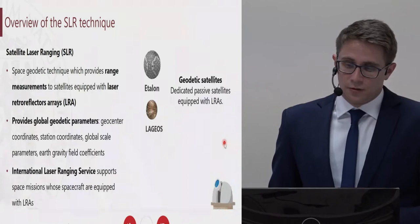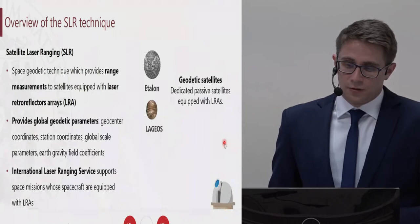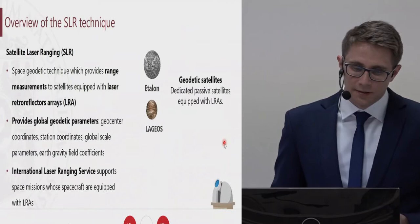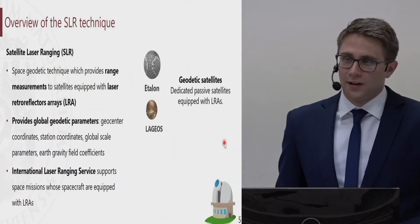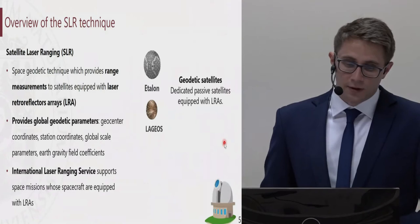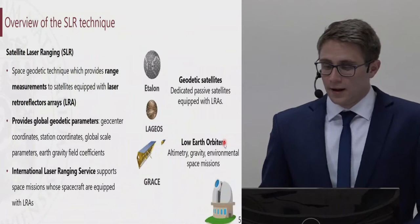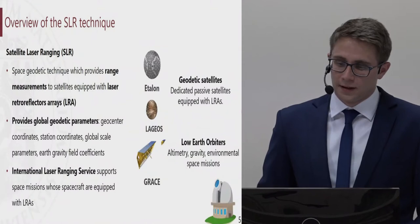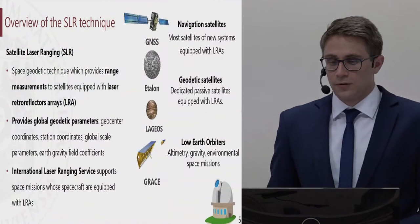SLR observations are conducted by station operators who have to choose the targets to track. The International Laser Ranging Service supports and coordinates all station activities, providing them with, for instance, the priority list of satellites to be tracked. As a result, ILRS supports all space missions whose spacecraft are equipped with LRAs. So SLR observations are not only conducted to geodetic satellites, but also to low-Earth orbiters such as GRACE, and — most interestingly for me — to navigation satellites.